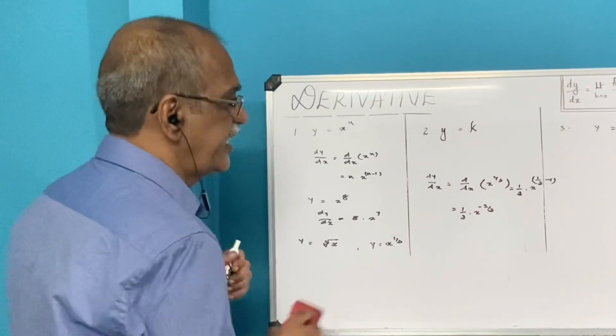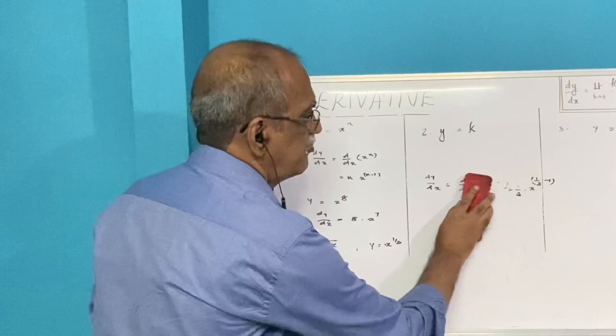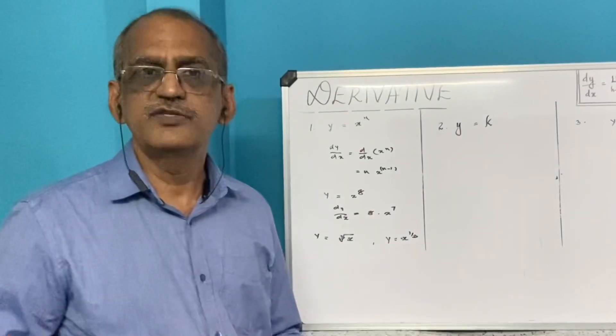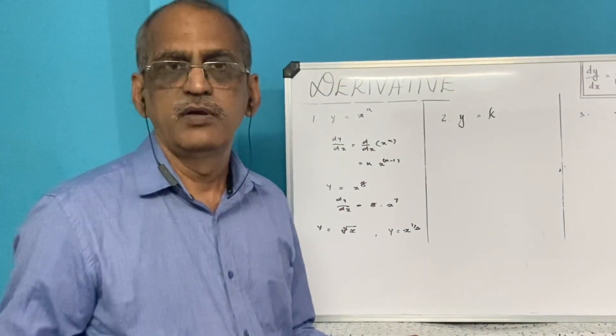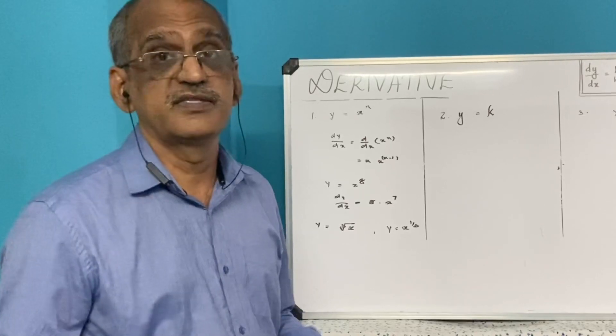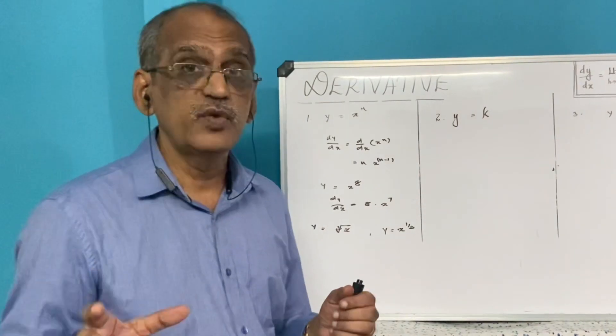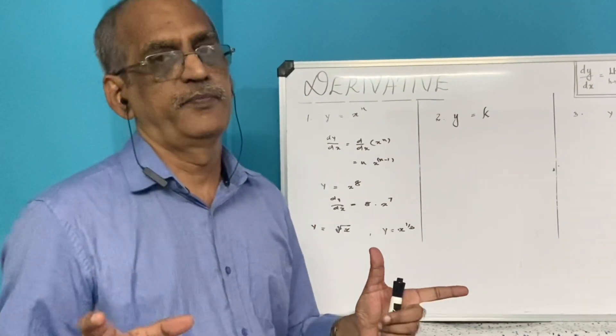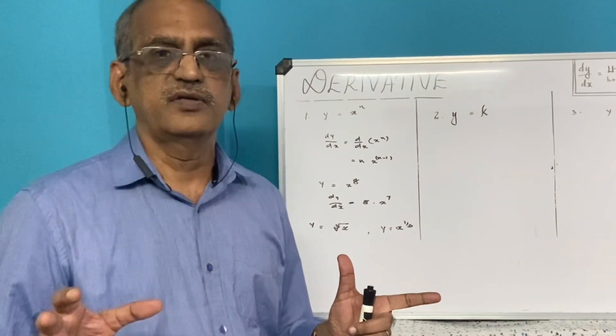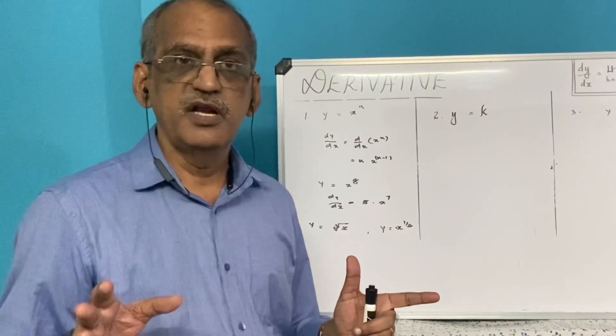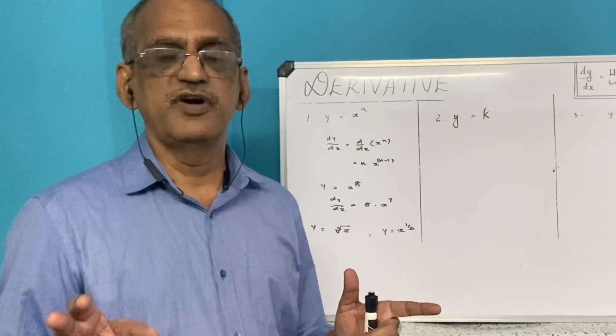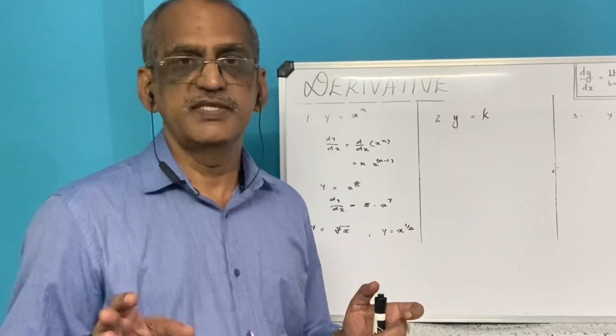Next let us study about a constant function. In a constant function there is no x at all, so there can't be a variation in x. Only if there's a variation in x, there will be a variation in y.